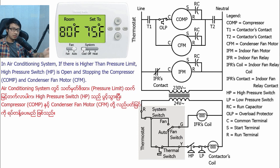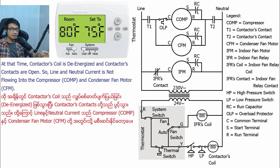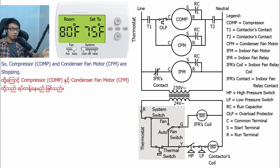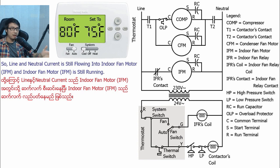In the air conditioning system, if there is a high-temperature or high-pressure limit reached, the high-pressure switch opens and stops the compressor and condenser fan motor, because the high-pressure switch disconnects current flowing into the contactor coil. At that time, the contactor coil is de-energized and contactor contacts are open, so line and neutral current is not flowing into the compressor and condenser fan motor and they stop. In this condition, the indoor fan relay coil is still energized and indoor fan relay contacts are still closed, so the indoor fan motor is still running.